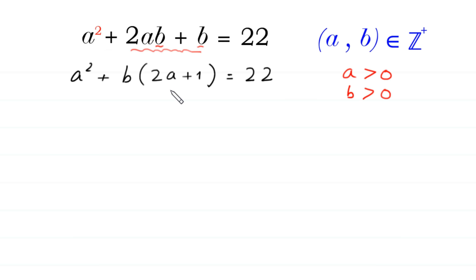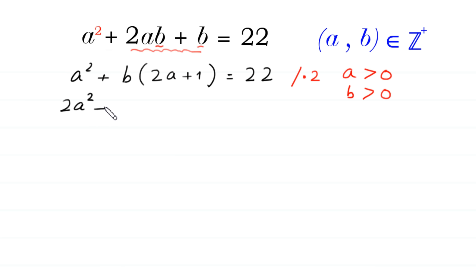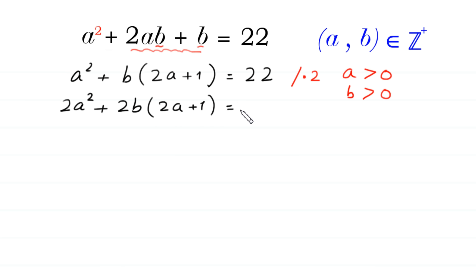Next, we multiply both sides of this equation by 2: 2a squared plus 2b times 2a plus 1 is equal to 22 times 2, which is 44.